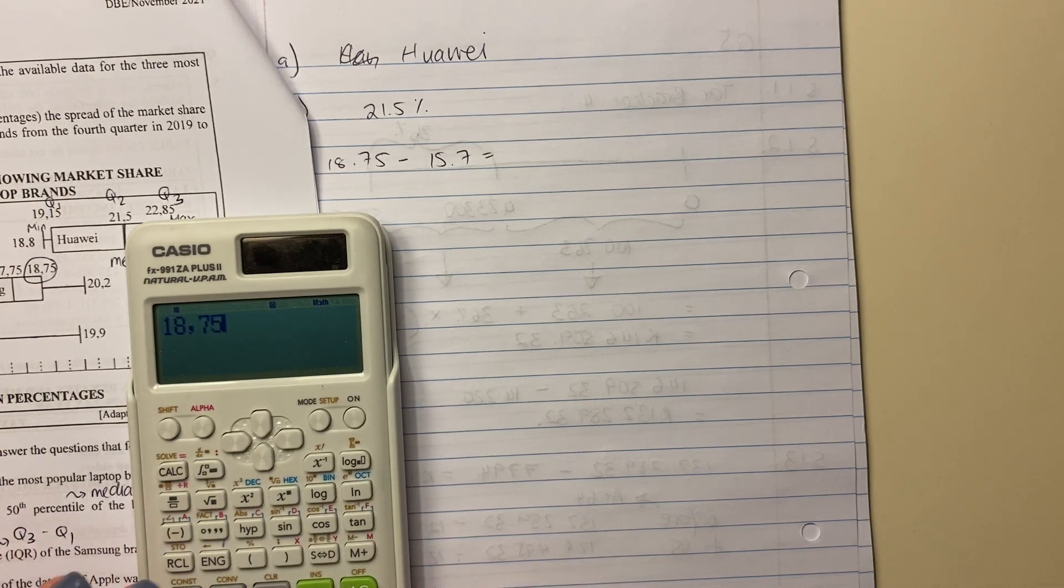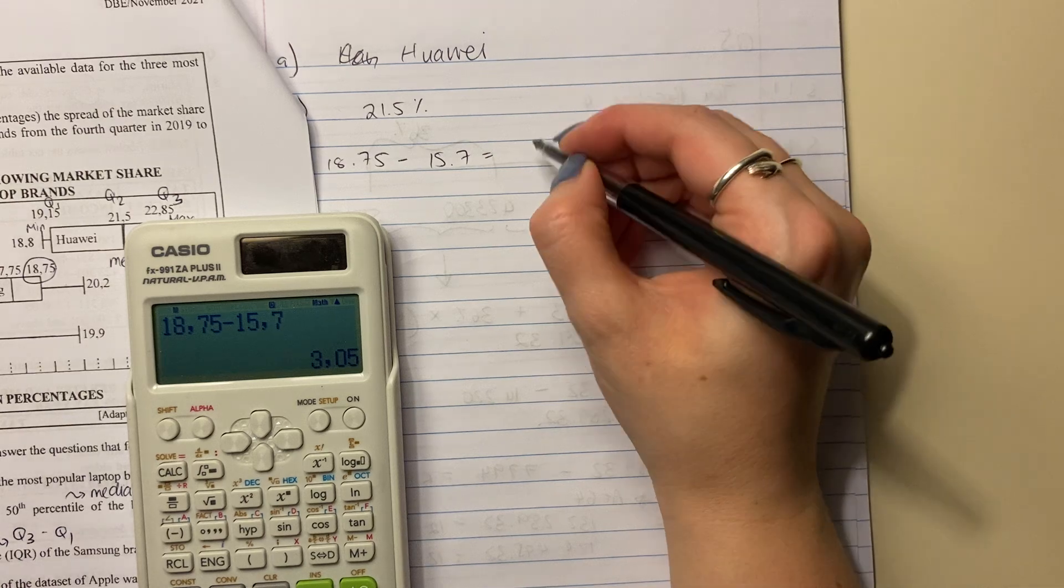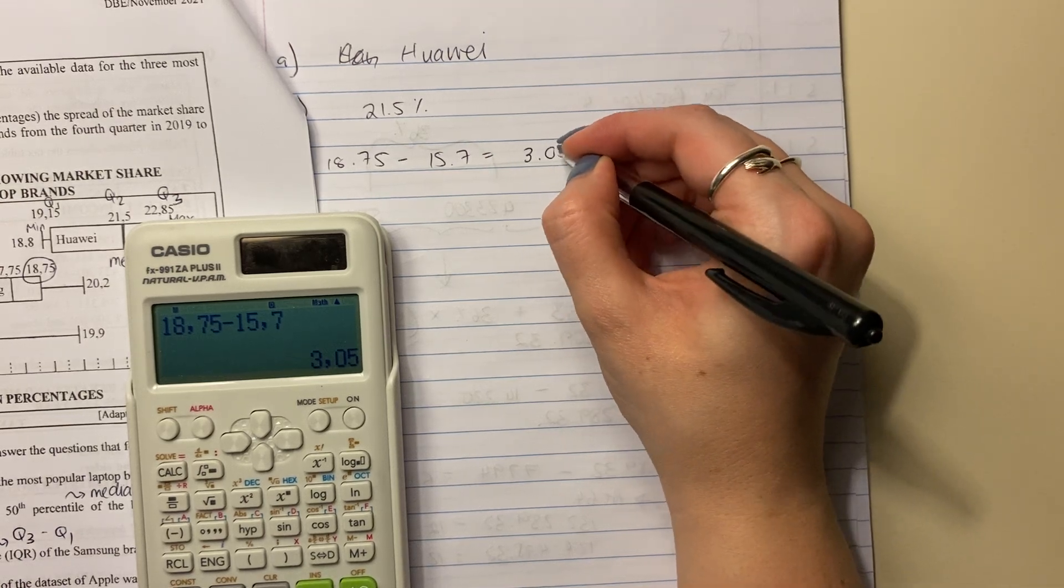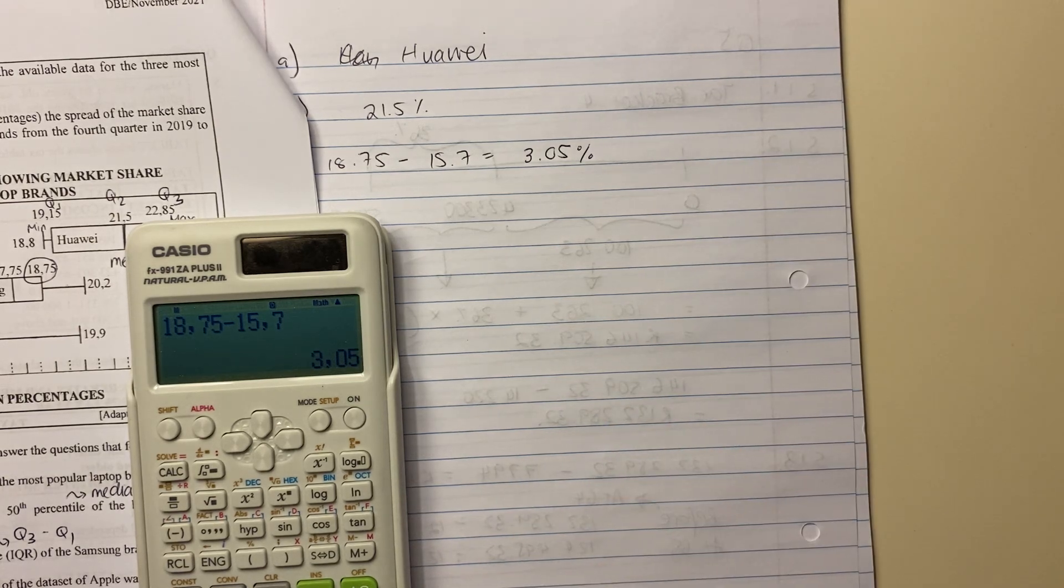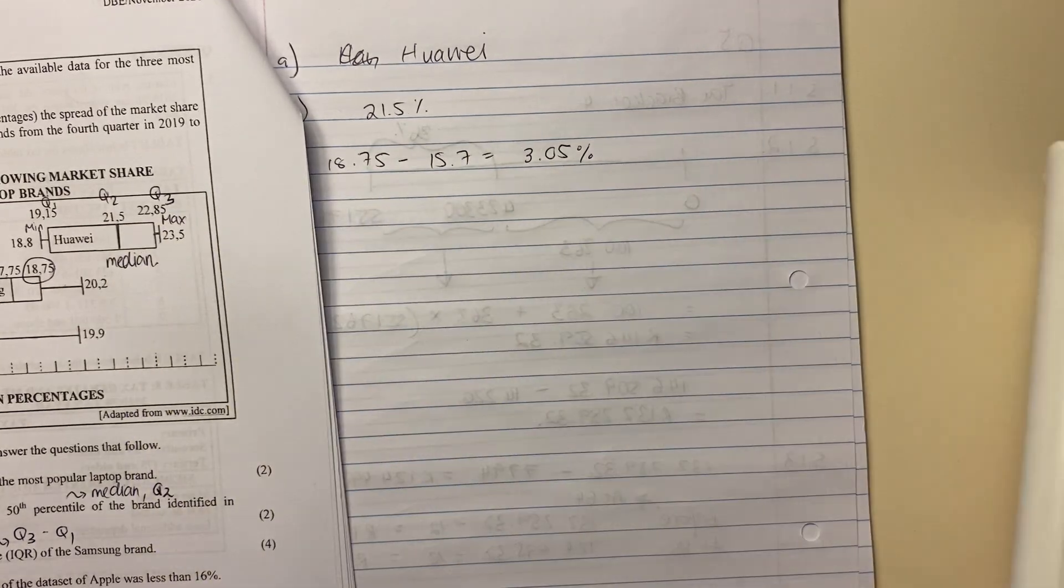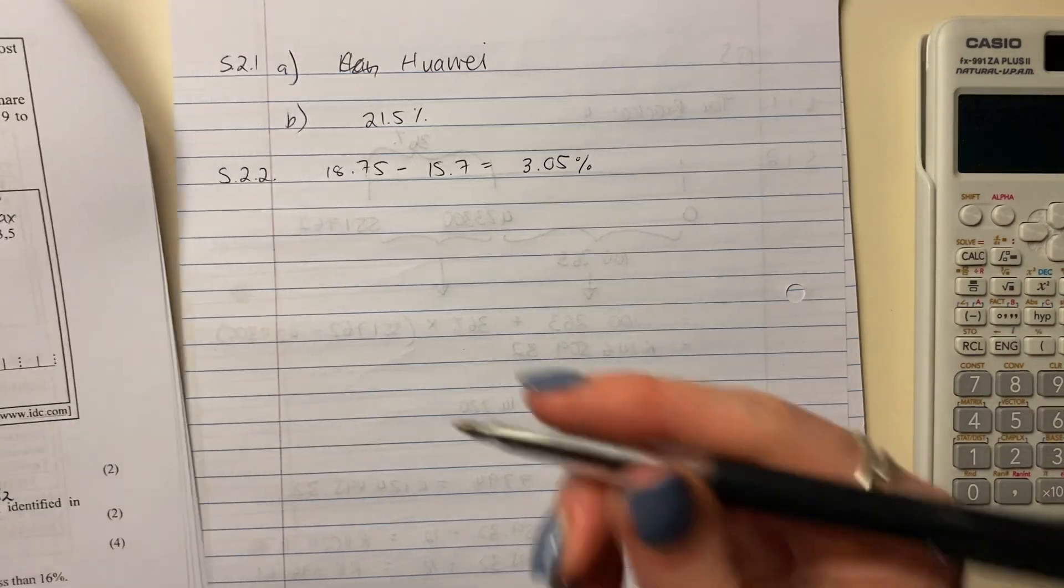Or if you're a little bit tired by this stage, and that's okay, we all get tired. Your answer here is 3.05%, not 3.05 by itself, percent. Remember it's important to keep your units in so that you actually indicate what you're talking about.